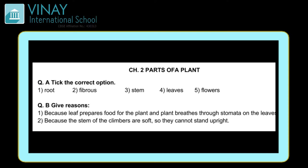Second one: onion has a dash root. Onion ko kaun sa root hota hai? The answer is fibrous root. Third: dash is the backbone of a plant. Plant ka backbone, yani ki supporting kaun hota hai — root or stem? The answer is stem.